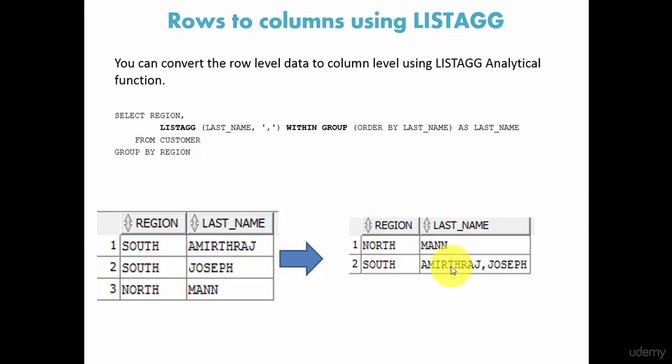Whenever you have multiple rows of values and you want to display those values in a single column separated by comma, semicolon, colon, or any other separator, you have to use the LISTAGG analytical function.